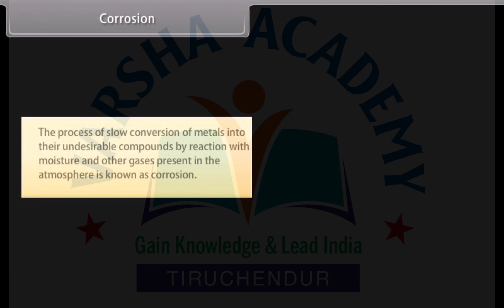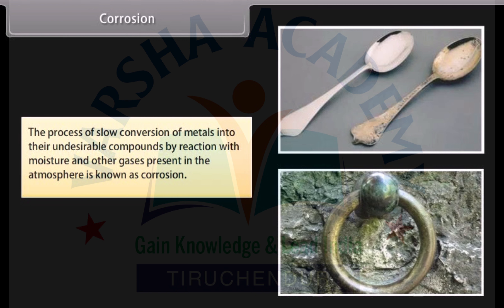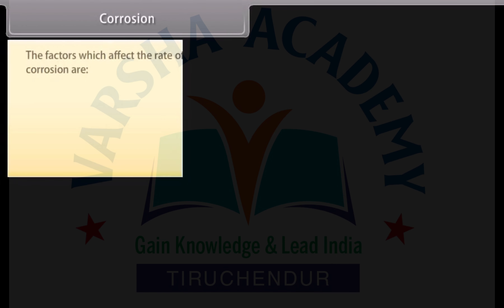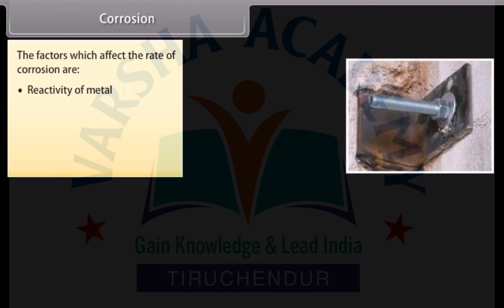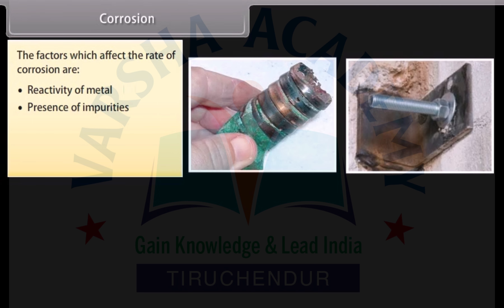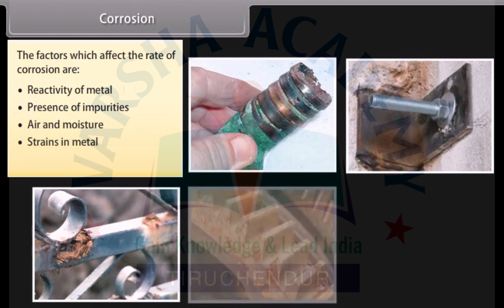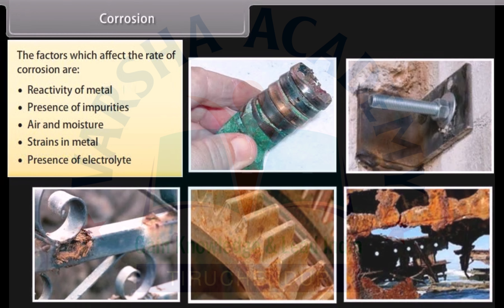Corrosion. The process of slow conversion of metals into their undesirable compounds by reaction with moisture and other gases present in the atmosphere is known as corrosion. For example, silver gets tarnished, iron rusts, copper develops a green coating on its surface, and lead loses its luster. The factors which affect the rate of corrosion are: reactivity of metal, presence of impurities, air and moisture, strains in metal, and presence of electrolyte.